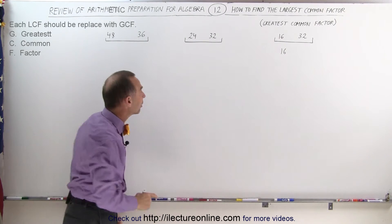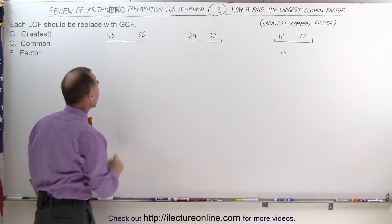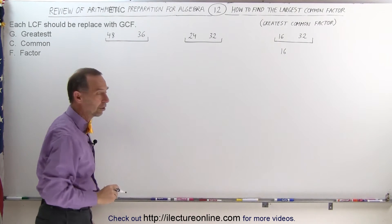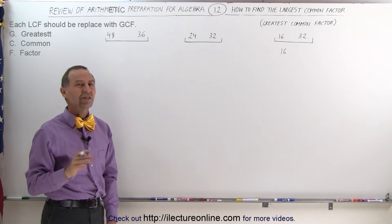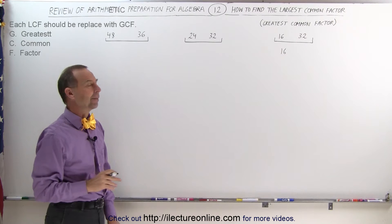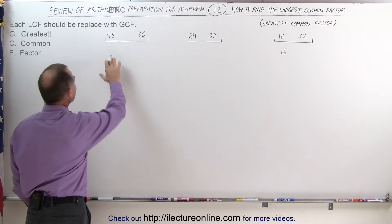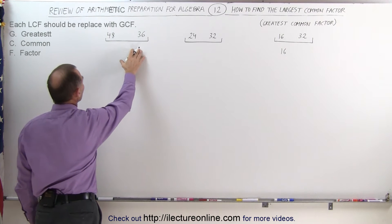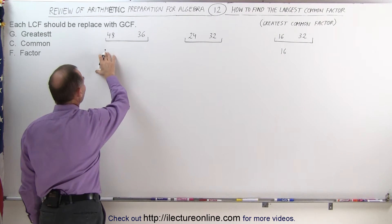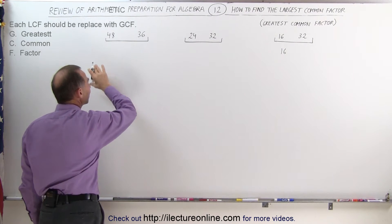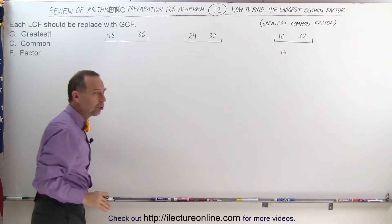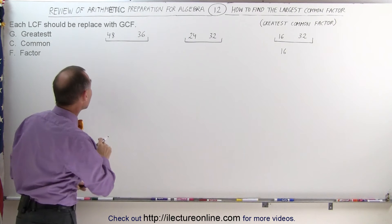But we don't have that luck in the first two sets of numbers, so we need to use a different technique. What you should do is take each of the two numbers and divide it by the smallest prime number.